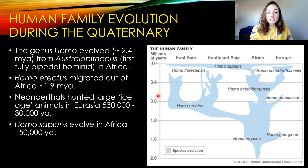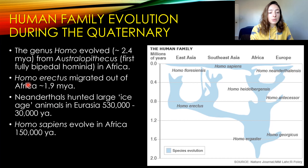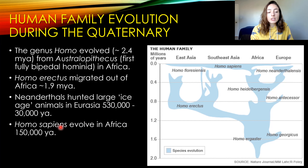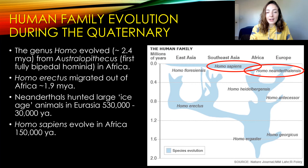One early Homo species, Homo erectus, migrated out of Africa around 1.9 million years ago and settled in East Asia around 0.9 million years ago. Neanderthals — also in the Homo genus — proliferated in Eurasia because they could hunt large ice age animals there, thriving from 530,000 to 30,000 years ago. Then Homo sapiens evolved in Africa around 150,000 years ago and quickly spread across almost the entire world.